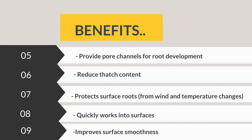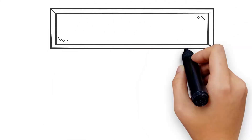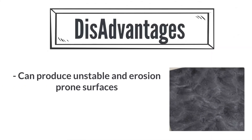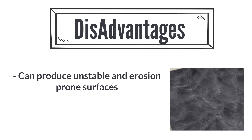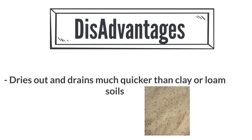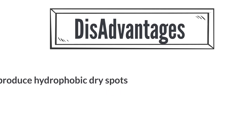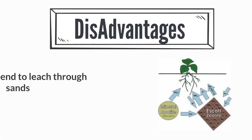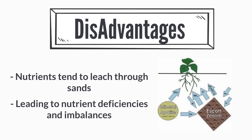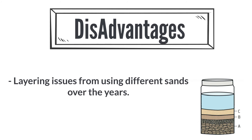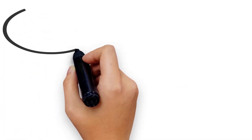So what are the constraints of sand? It can produce unstable surfaces that are prone to erosion, dries out and drains much quicker than clay or loam soils, can produce hydrophobic dry spots, nutrients tend to leach through the sand leading to deficiencies and imbalances, and there can be layering issues from using different sands over the years.